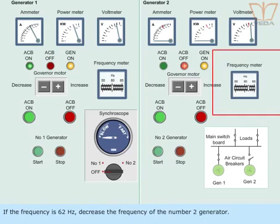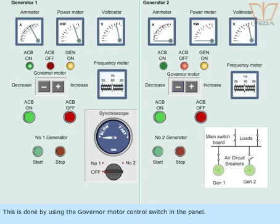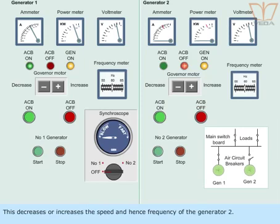If the frequency is 62 Hz, decrease the frequency of the number 2 generator. This is done by using the governor motor control switch in the panel. This decreases or increases the speed and hence the frequency of generator 2.